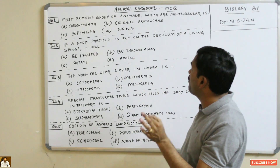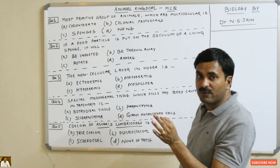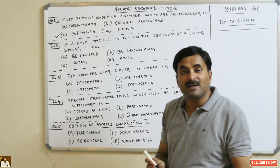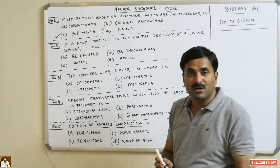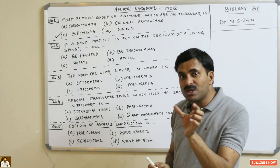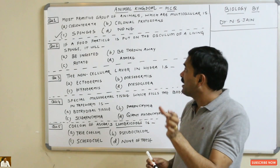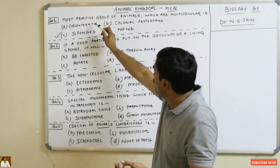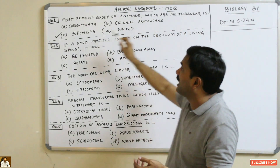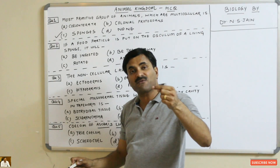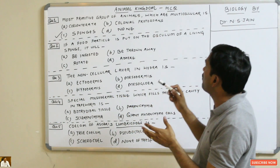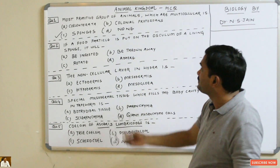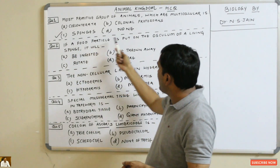According to classification, the first multicellular group of organisms were the sponges. In sponges, a cellular grade of body organization is found — not the tissue grade. There is a loose association of many cells. So the most primitive group of animals which are multicellular are the sponges, also called Porifera.